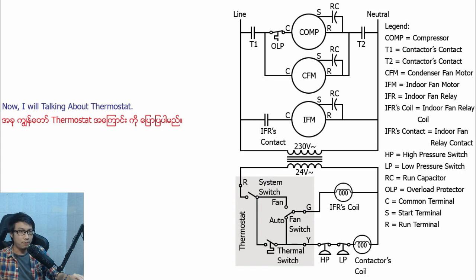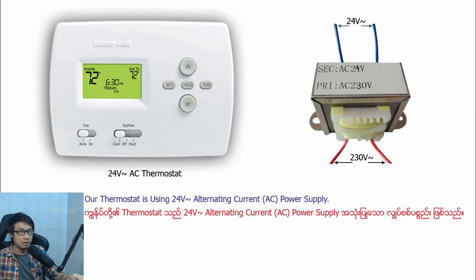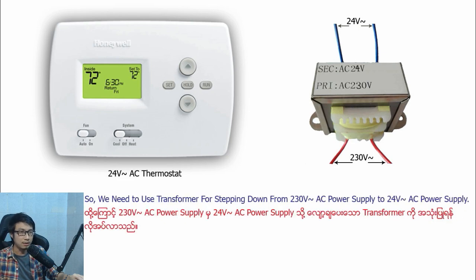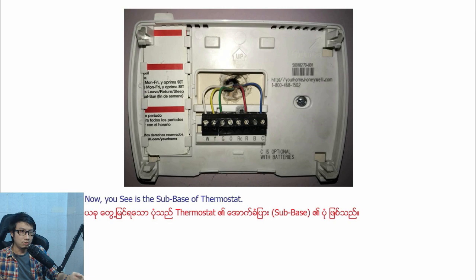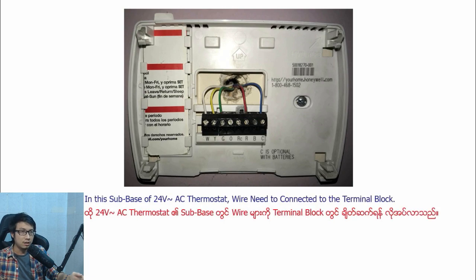Now I will talk about the thermostat. Our thermostat is using 24V alternating current AC power supply, so we need to use a transformer for stepping down from 230V AC power supply to 24V AC power supply. Now you can see the sub-base of the thermostat.